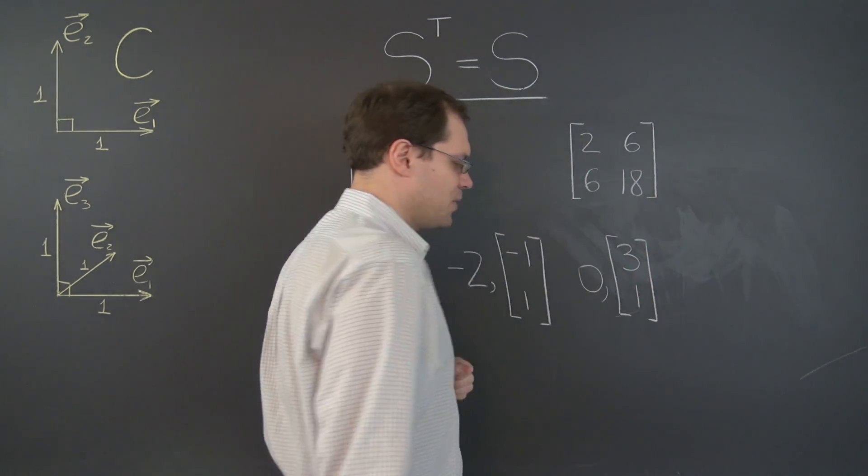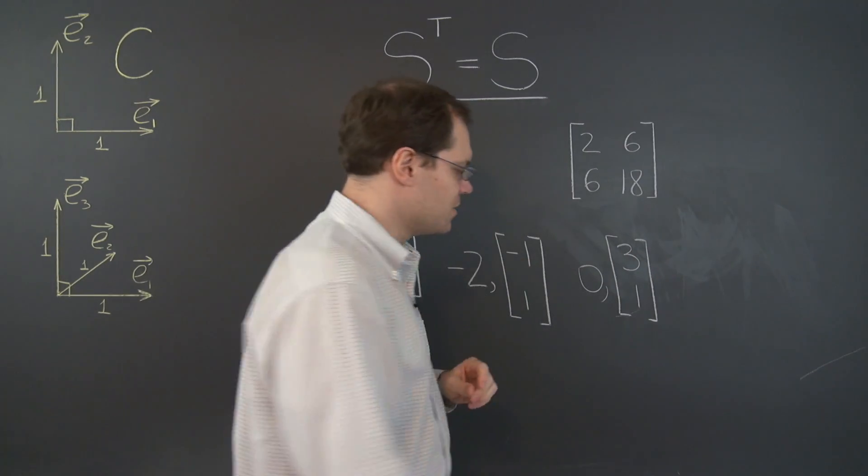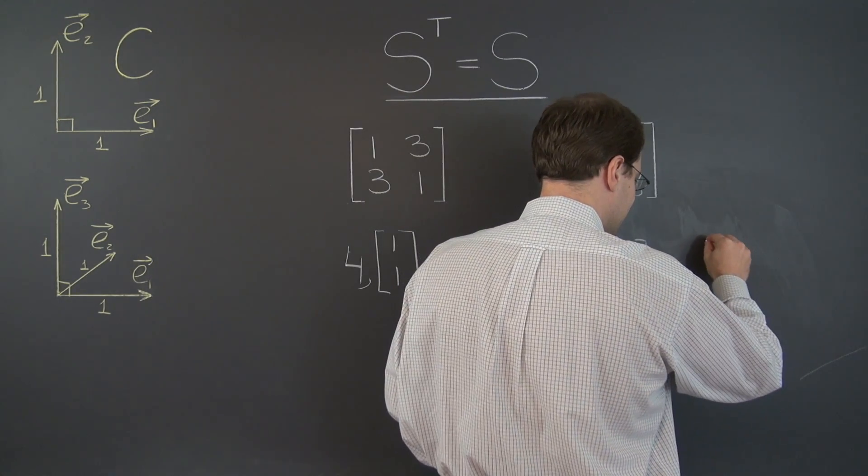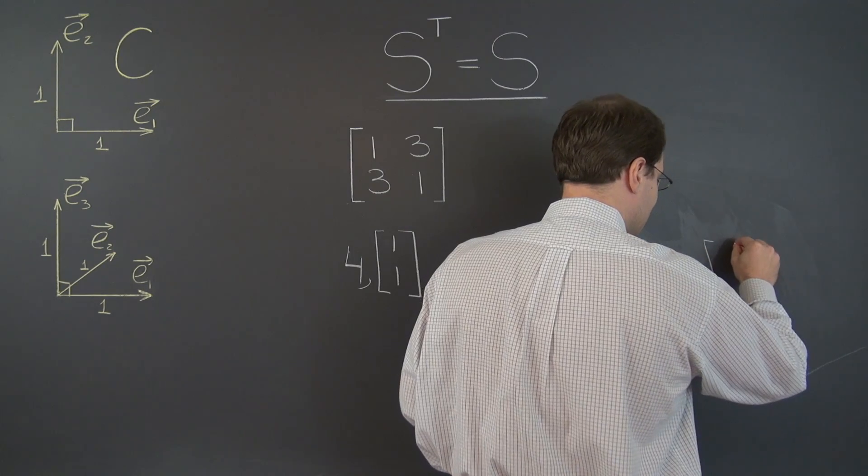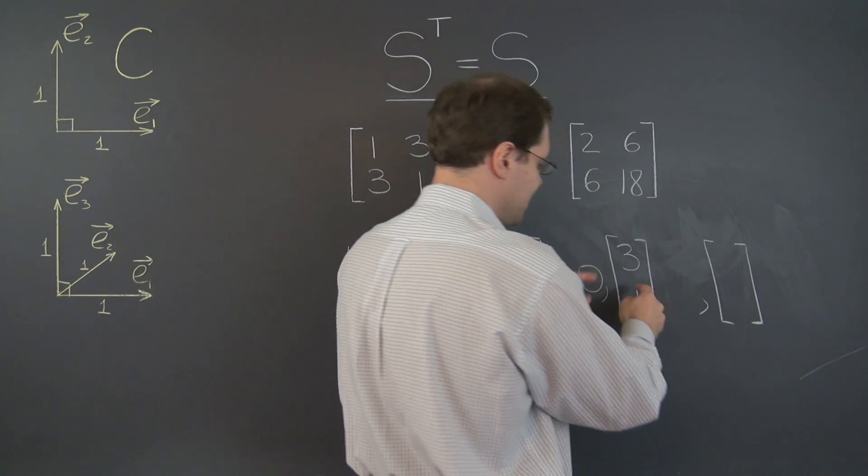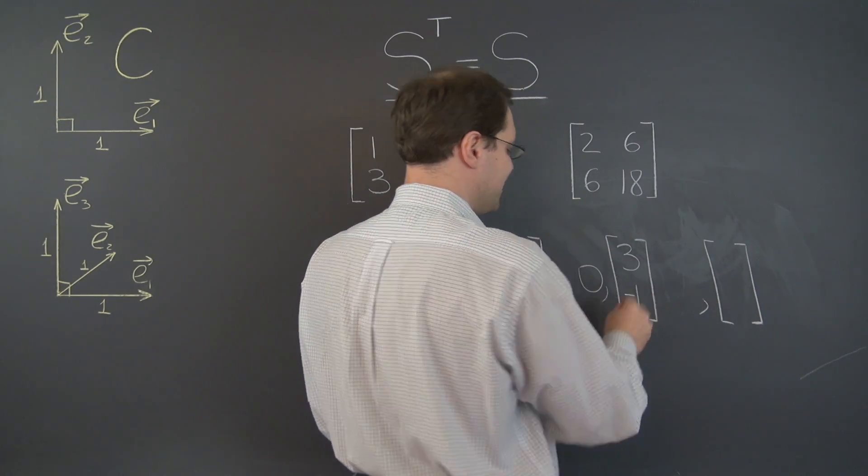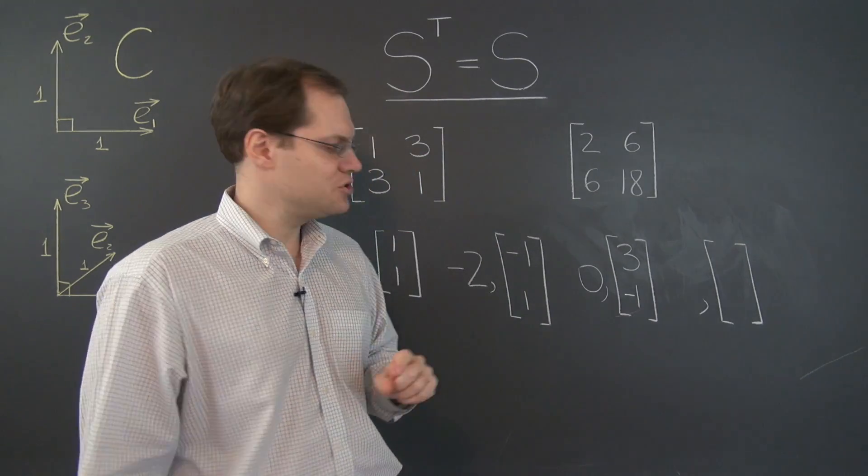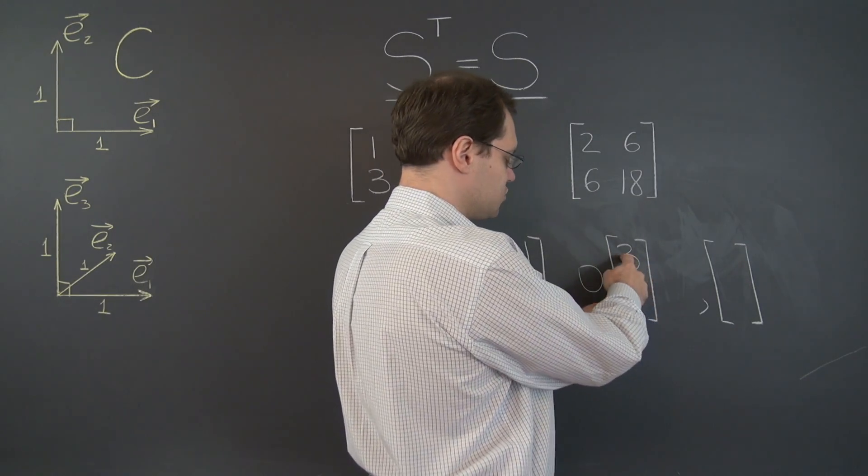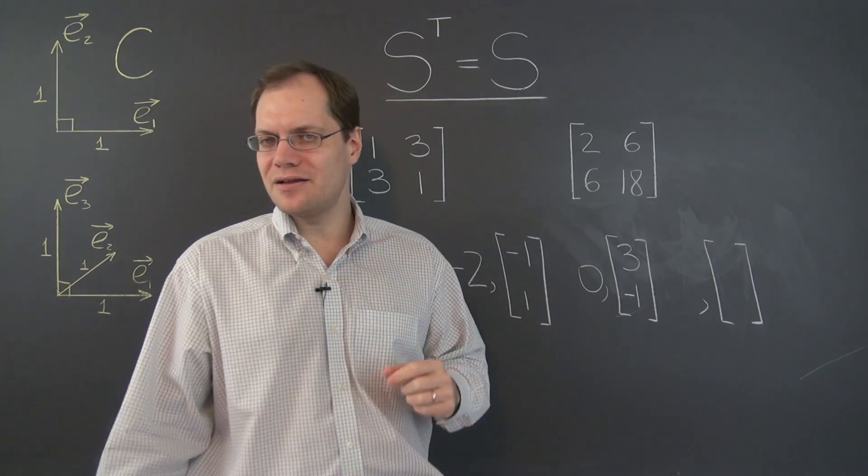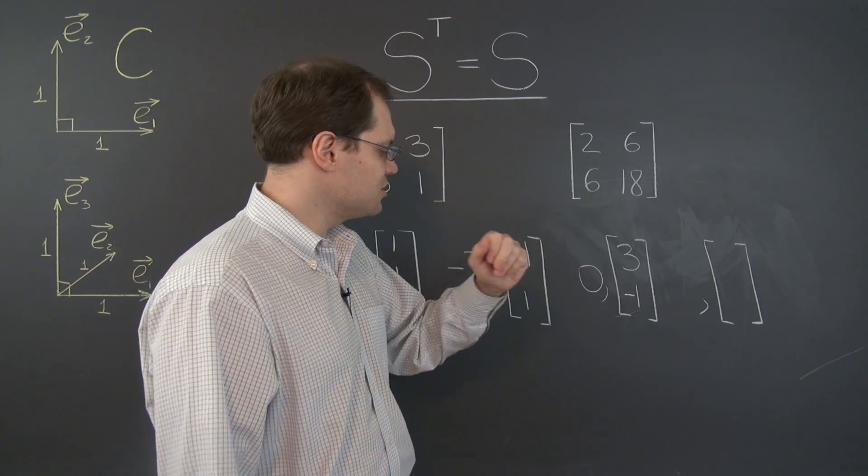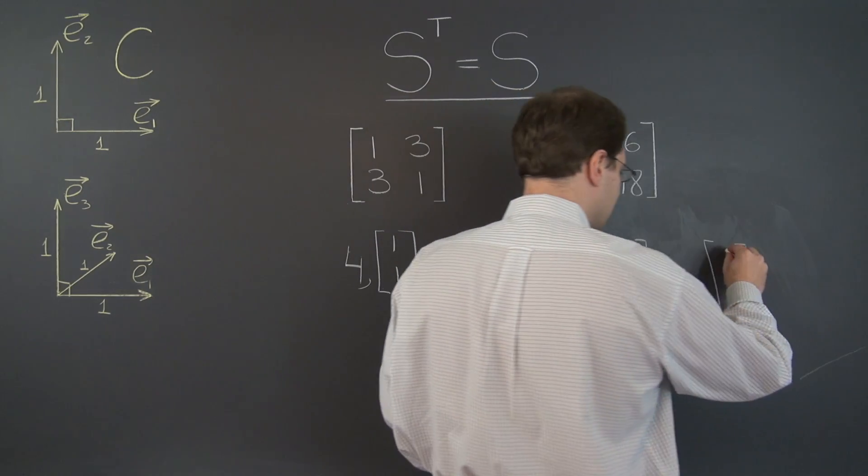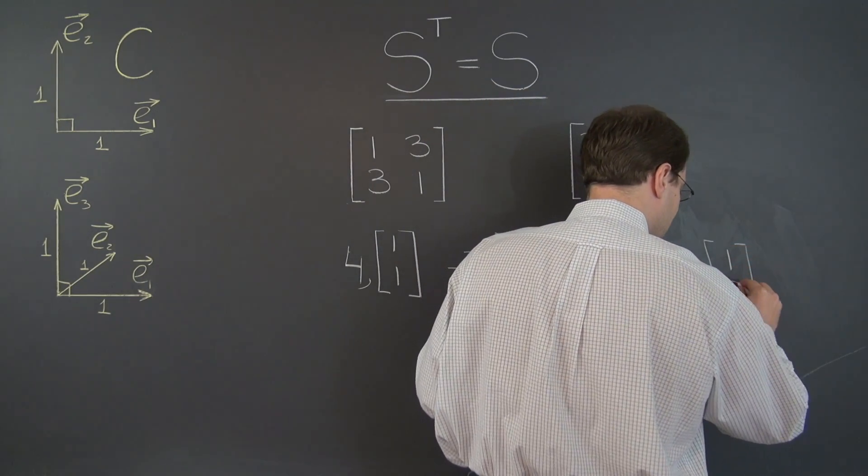3, negative 1. And so we immediately know that the other eigenvector has to be orthogonal to this one. So we'll do the same thing. Excuse me, 3, negative 1. So we're going to do the same thing. We'll switch these entries and put a minus sign in front of one of them. So of course, we'll do it in front of the negative number. So we end up with 1, 3.